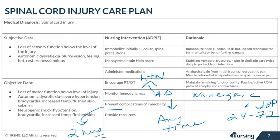Spinal cord injury patients often require resources within the community and in their home for care. These things could include wheelchairs, assistive devices, shower chairs, and hospital beds. We want to include the social worker to help set these things up for the patient.